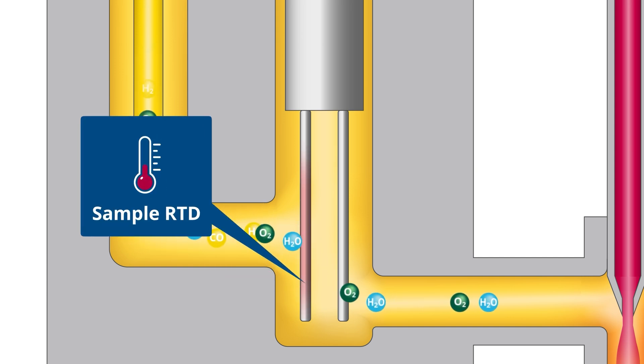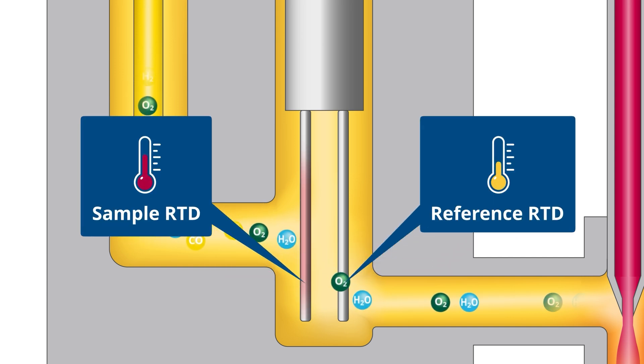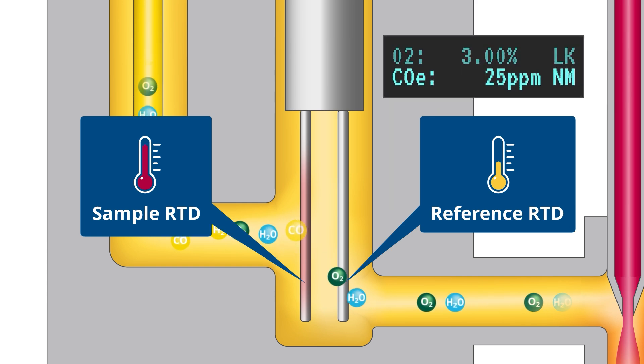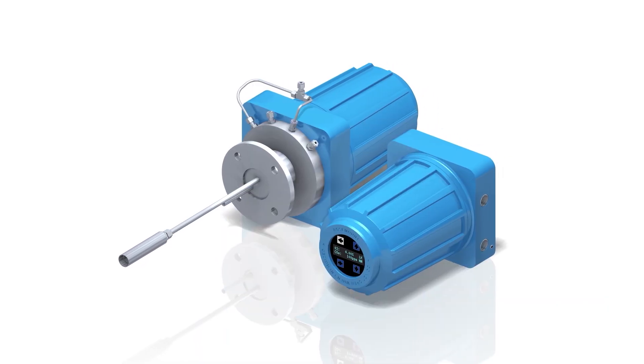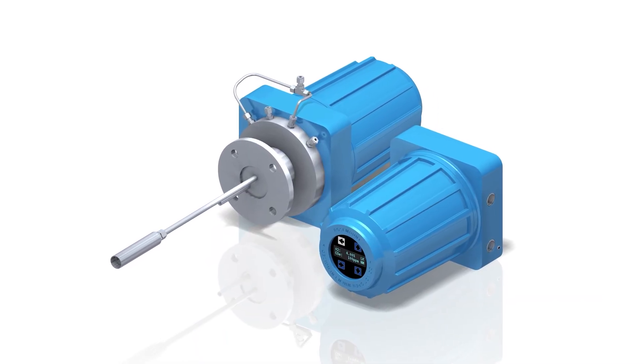This reaction produces heat. The difference in temperature between the sample RTD and the reference RTD, measured in resistance, indicates the concentration of combustibles present. To learn more about the Rosemount OCX 8800 Oxygen and Combustibles Analyzer,